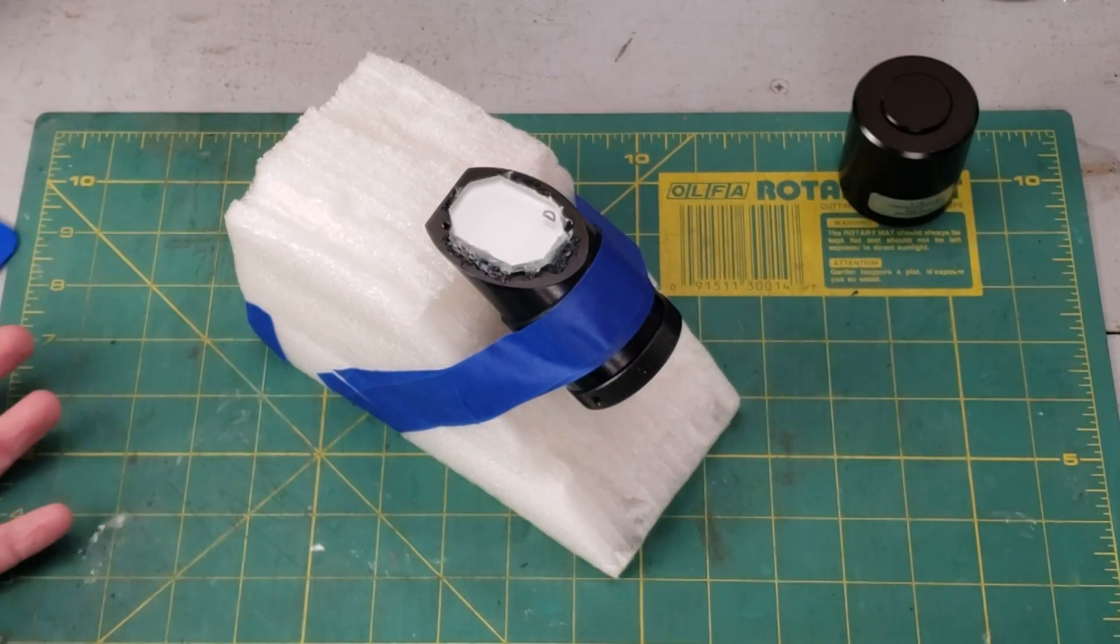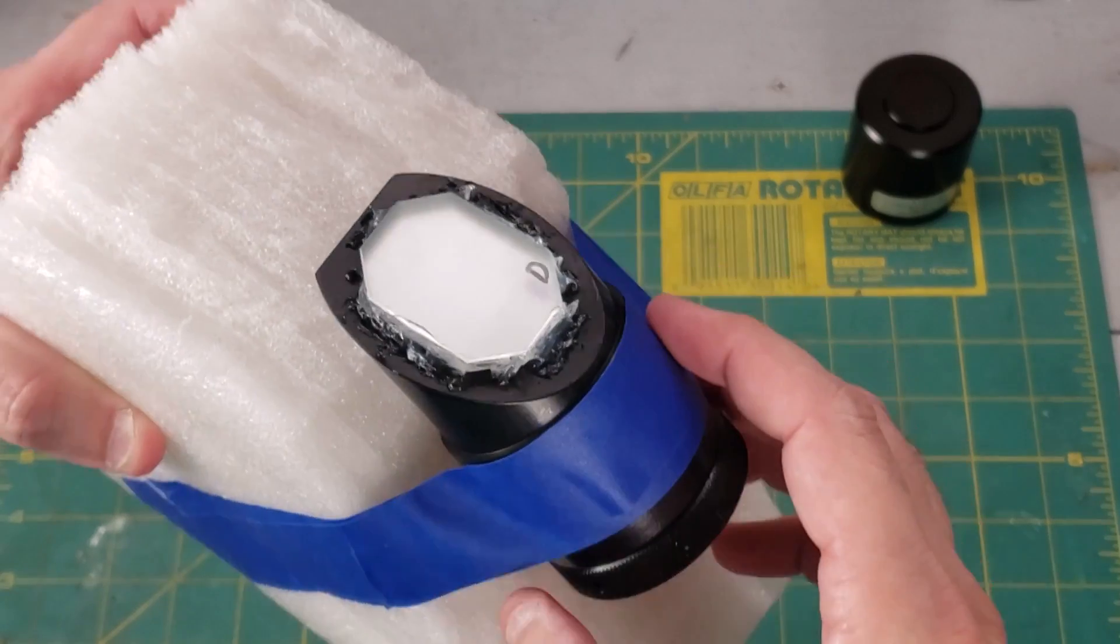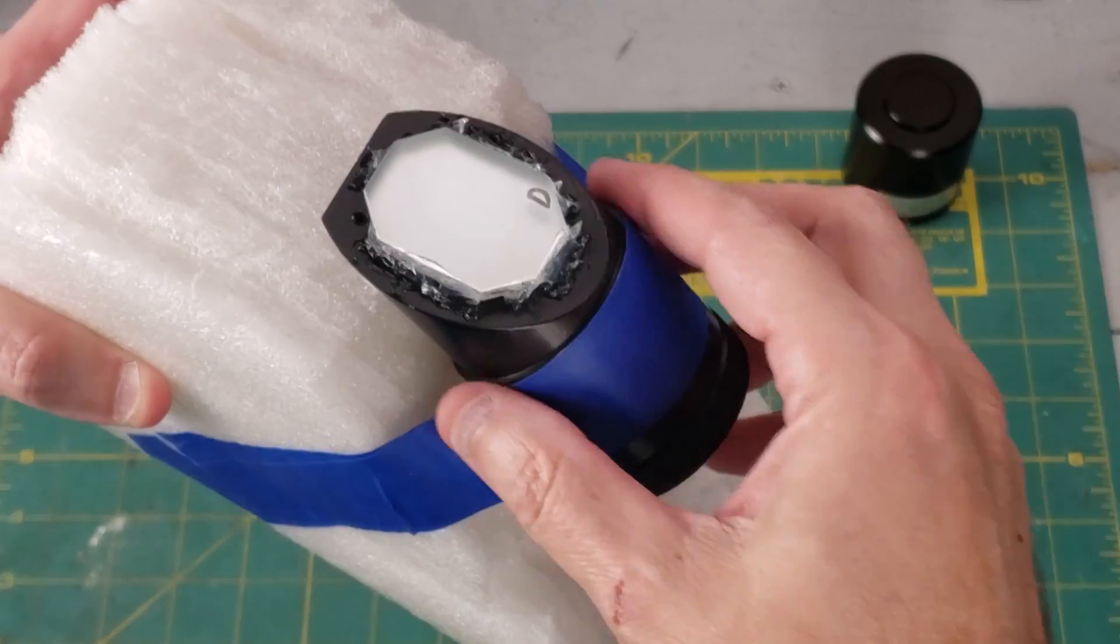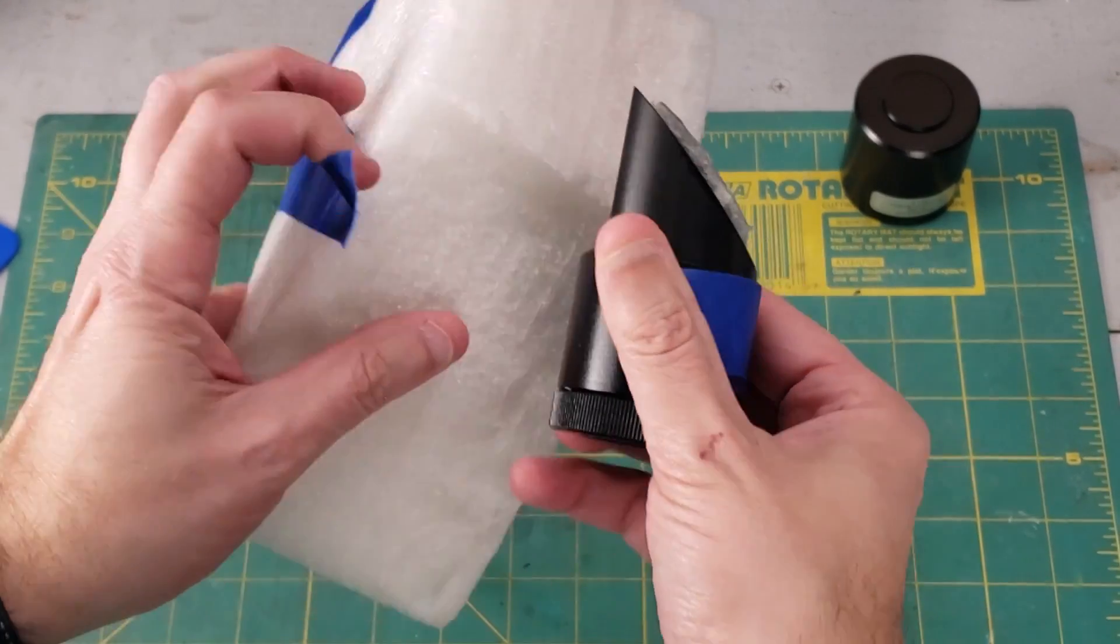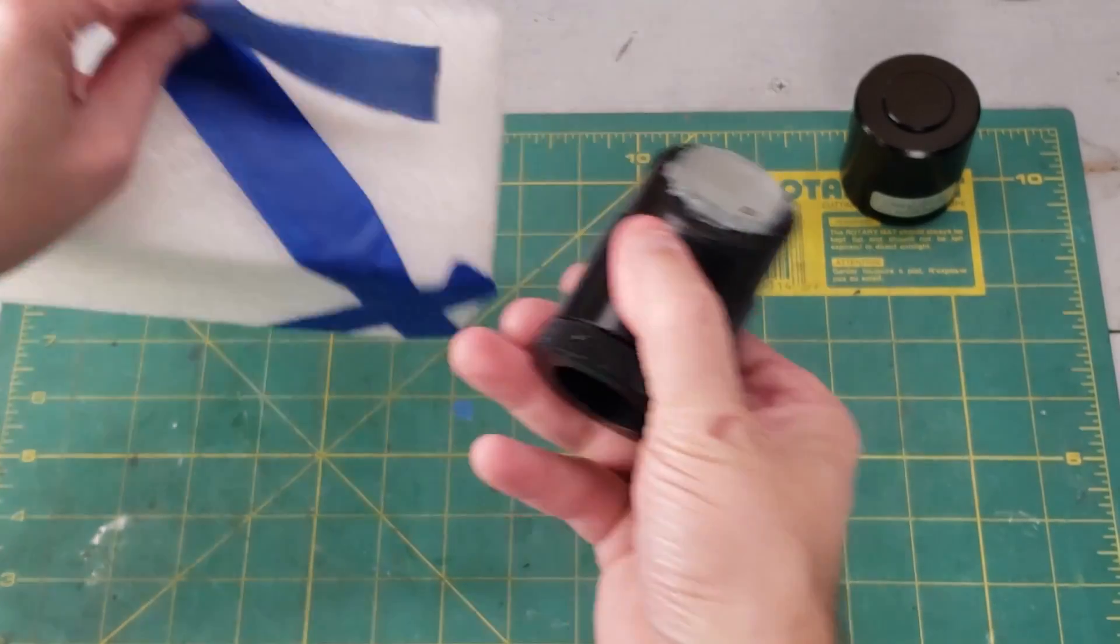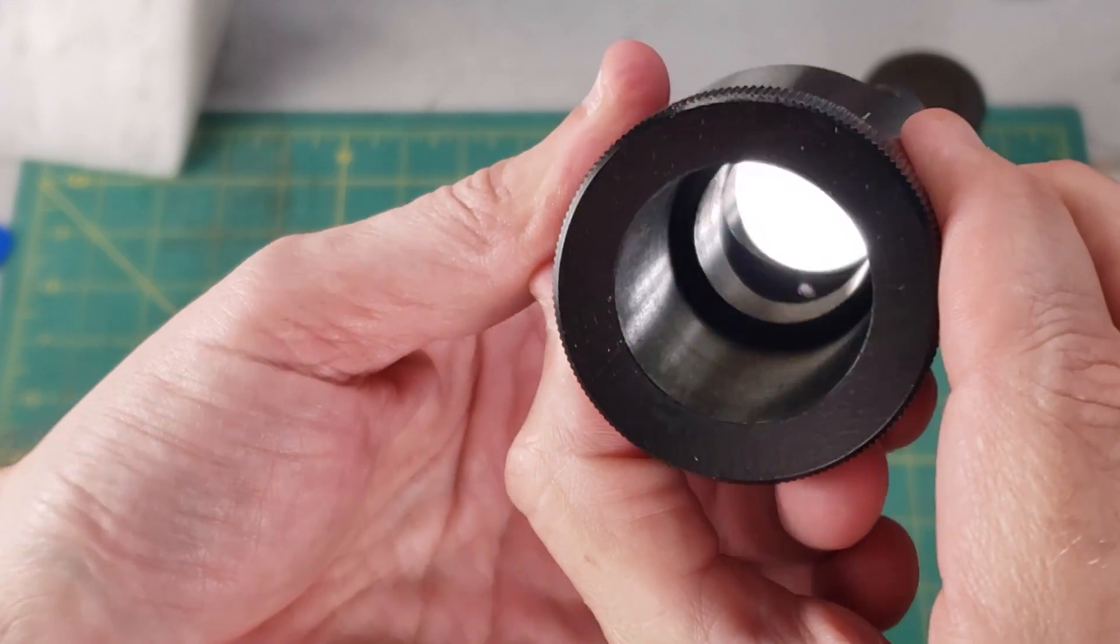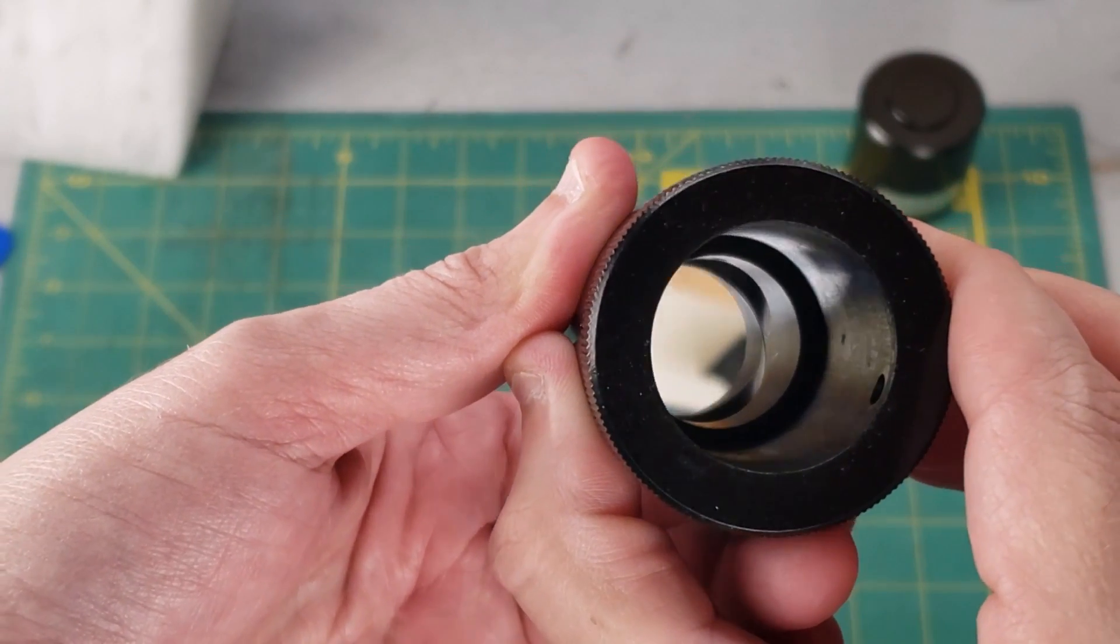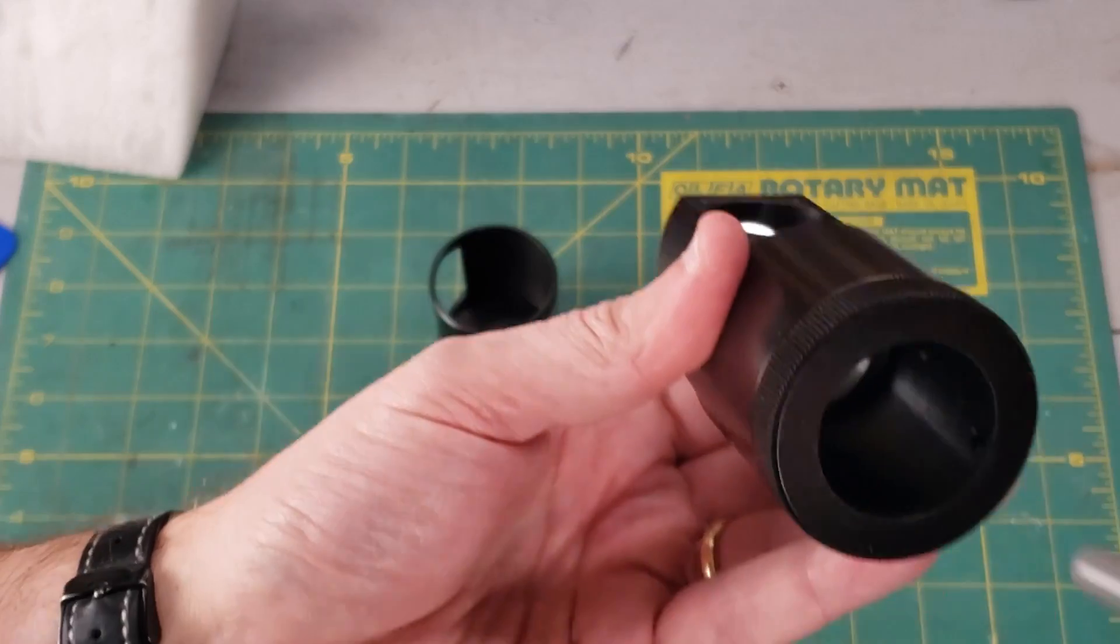Well, here we are 24 hours later. Let's take a close look at this. Looks pretty good. Let's remove it from here so we can look and see if any glue seeped around the edges. I don't see any glue seeped around the edges. That's pretty good. Let's put it back together. Let's blow it off.